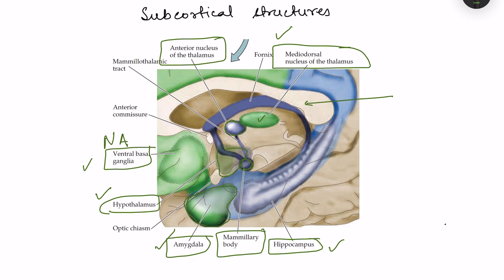Now let's look at the connections of the limbic system. The projections are essentially tracts — neurons connecting different regions. The mammothalamic tract goes from the mammillary body of the hypothalamus to the anterior nucleus of the thalamus. The fornix is another tract running from the hippocampus into the mammillary body, forming a white matter structure. The subcortical structures we discussed are the nuclei of the limbic system.